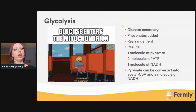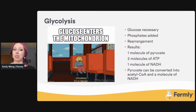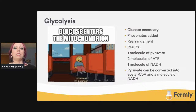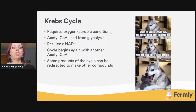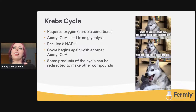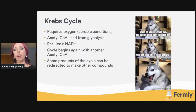The glucose undergoes rearrangement and the addition of phosphates, producing a molecule of pyruvate, two molecules of ATP, and one molecule of NADH. The pyruvate can then be converted into acetyl-CoA, which we're going to use in the Krebs cycle. The Krebs cycle requires oxygen — aerobic conditions. Acetyl-CoA is added to a four-carbon molecule, rearranges, loses two molecules of CO2, and generates two NADH. The resulting four-carbon molecule rearranges back to accept another acetyl-CoA, and the cycle begins again. Some products of this cycle go off to do other things useful for the cell.